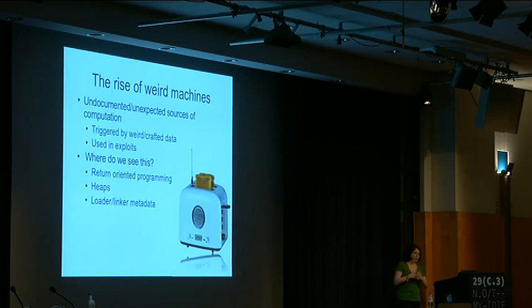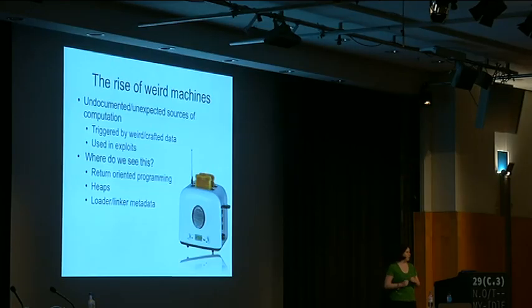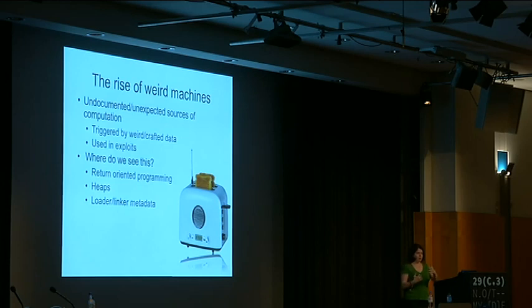In heap crafting attacks, anything that involves trying to get the heap into a predictable state — that's a weird machine. Trying to make a lot of mallocs freeze so that the so-called randomized heap ends up being more predictable, and then the attack can continue, perhaps overriding some function address. And then what we're looking at is the linker-loader metadata and weird machines that we end up finding just by how the metadata is processed.